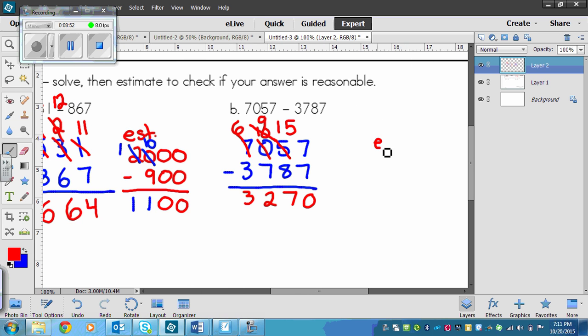And then to estimate, we round both numbers and then subtract. So 7,000 would be the top number because the 0 is 4 or less. So it lets the 7 rest. And then we've got a 3 here and a 7 on the side. So that turns that into a 4,000. And we subtract. And we get 3,000. So that looks like it's a reasonable answer.